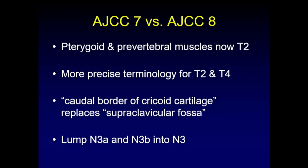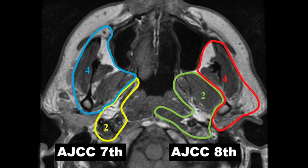Key differences between AJCC-7 and AJCC-8: previously, pterygoid and prevertebral muscle involvement rendered disease T4, but now it is downgraded to T2. More precise terminology has been adopted — for example, the caudal border of the cricoid cartilage replaces the vague 'supraclavicular fossa' for N staging. N3a and N3b have been consolidated into a single N3 category. In the updated staging, T2 now includes medial and lateral pterygoid muscles, prevertebral musculature, and carotid space; T4 requires extension into the masticator space or parotid gland.